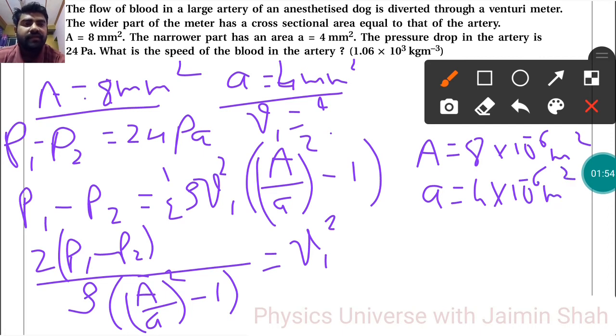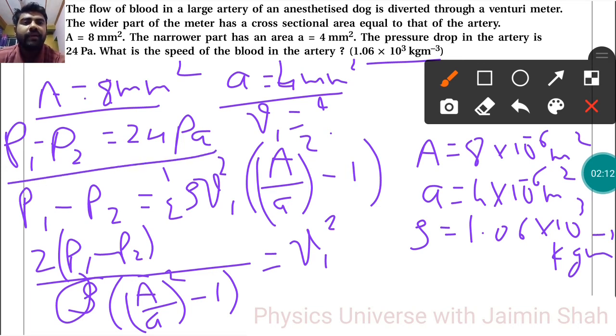Now for the density, rho is given as 1.06 times 10 to the 3 kilogram per meter cubed. And P1 minus P2 is 24 pascal.